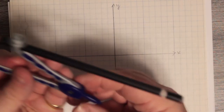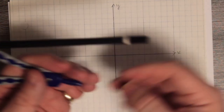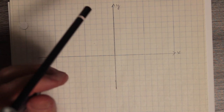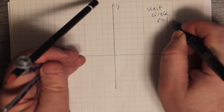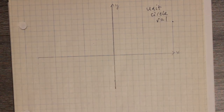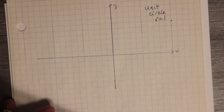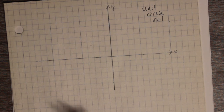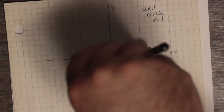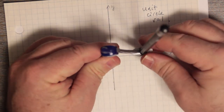A circle, especially a unit circle — a unit circle, by the way, has a radius of 1. That's why we call it a unit circle. And when a circle has a radius of 1, it has some very special properties. I'm not going to do that right now; I'm going to do some other things and get some basic terminology out. I'm not going to try for a unit circle.